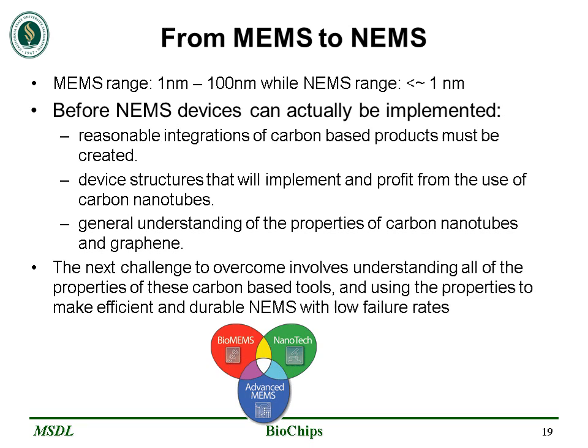Now we're going to talk about the NEMS. NEMS stands for Nano-Electromechanical Systems. Their range is less than 1 nm. But before NEMS devices can actually be implemented, reasonable integration of carbon-based products must be created. The focus is currently shifting from experimental work toward practical application and device structures that will implement and profit from the use of carbon nanotubes. At this point in NEMS research, there is a general understanding of the properties of carbon nanotubes and graphene. The next challenge involves understanding all of the properties of these carbon-based materials and using them to make efficient and durable NEMS with low failure rates.